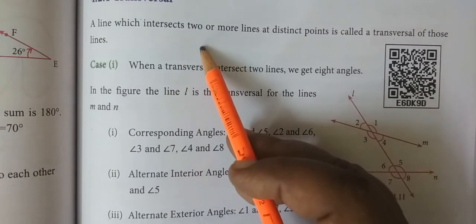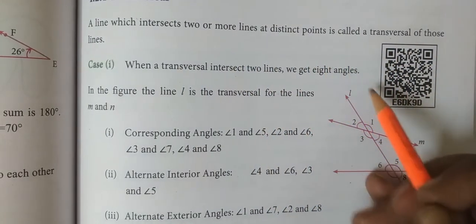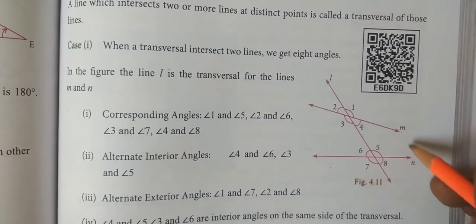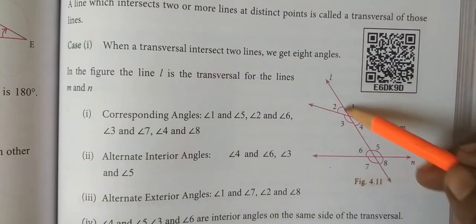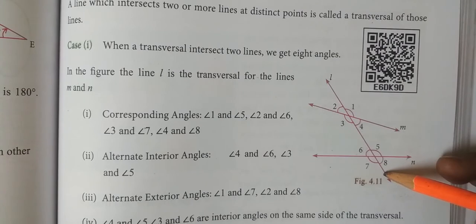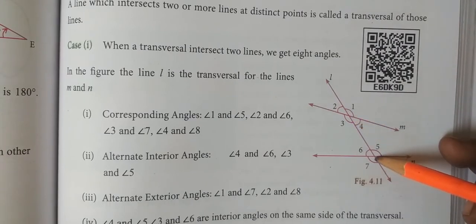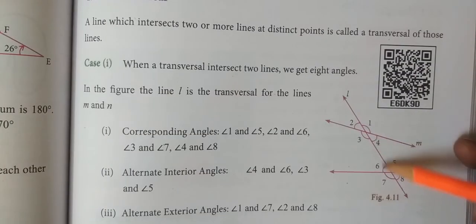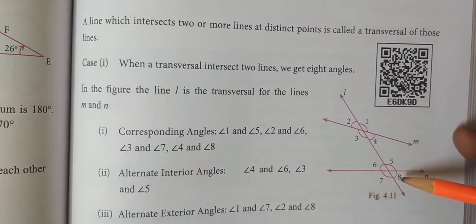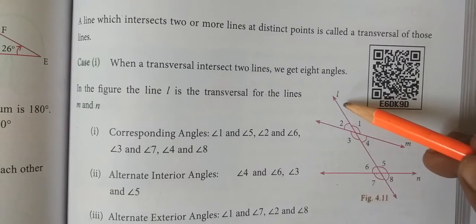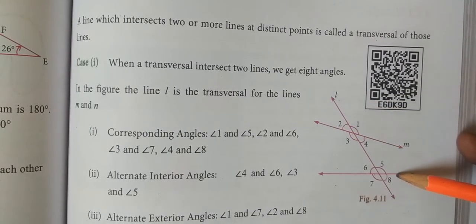A line which intersects two or more lines at a distinct point is called a transversal. Here is a straight line and here is another straight line. The straight line is intersected with another straight line, and there are two distinct points. This intersecting line is the transversal. So what is transversal? It is a line which intersects a set of two lines.